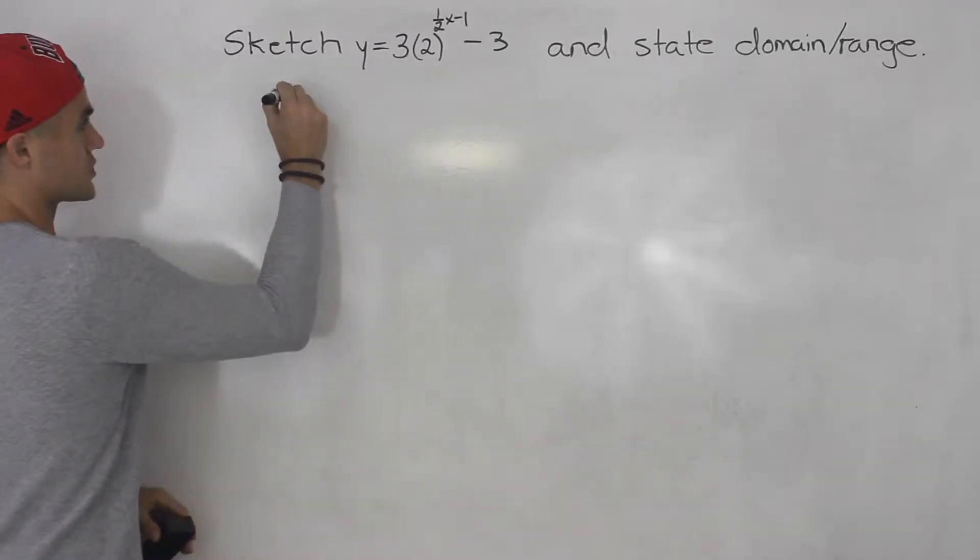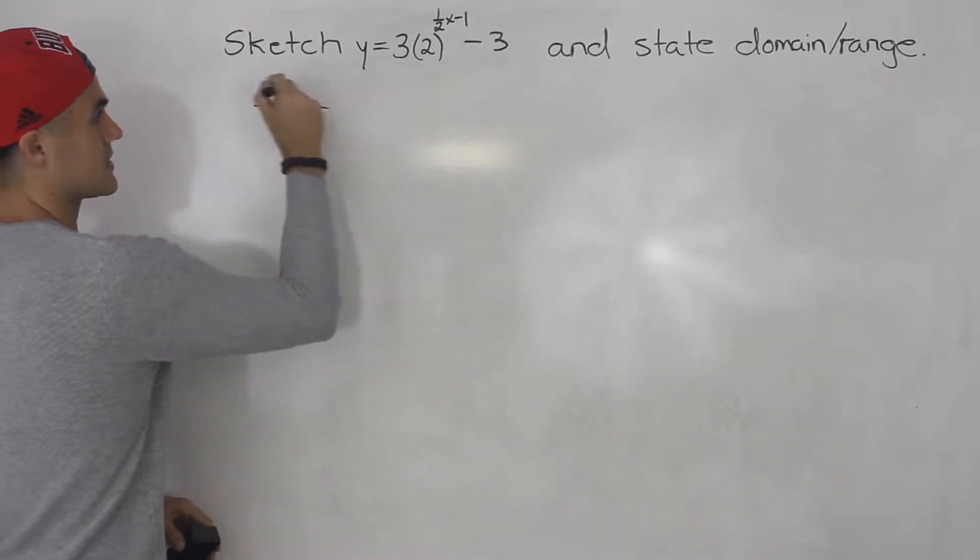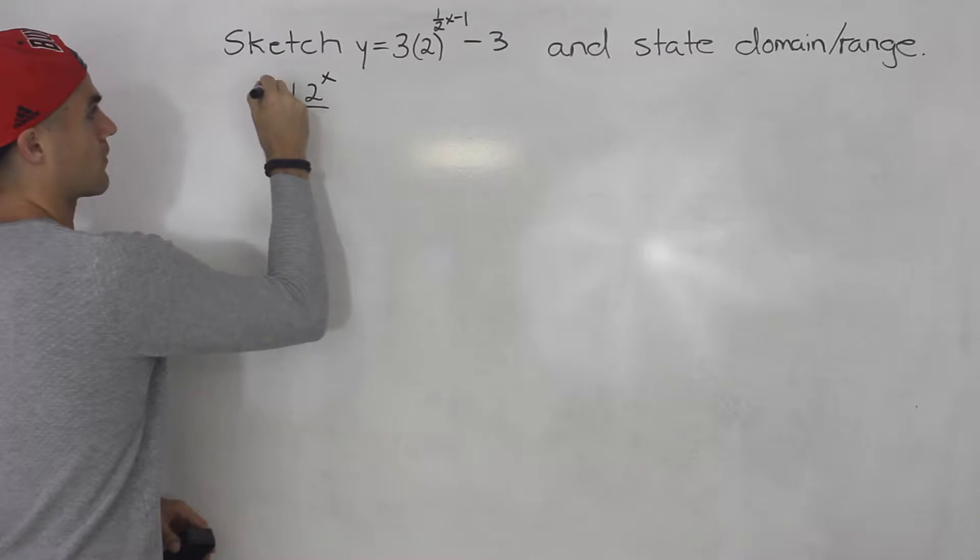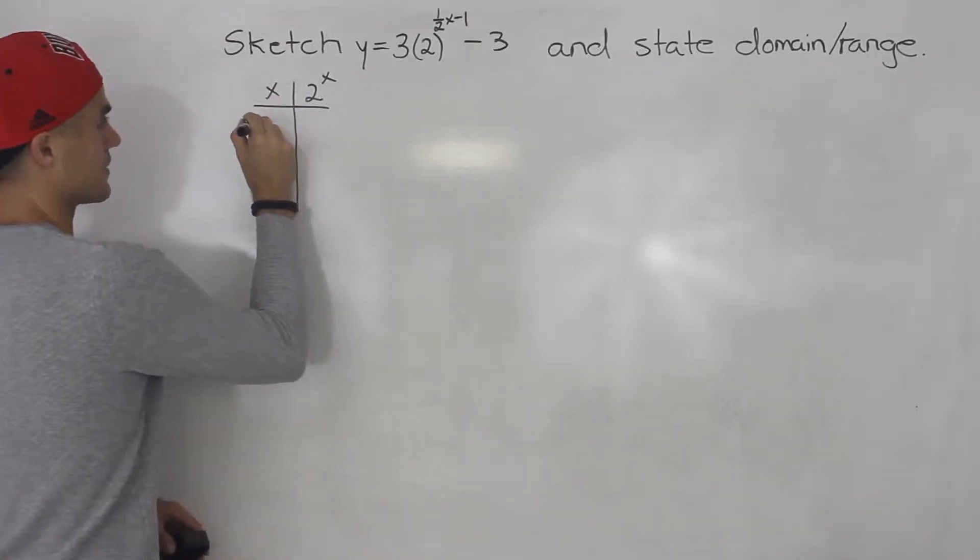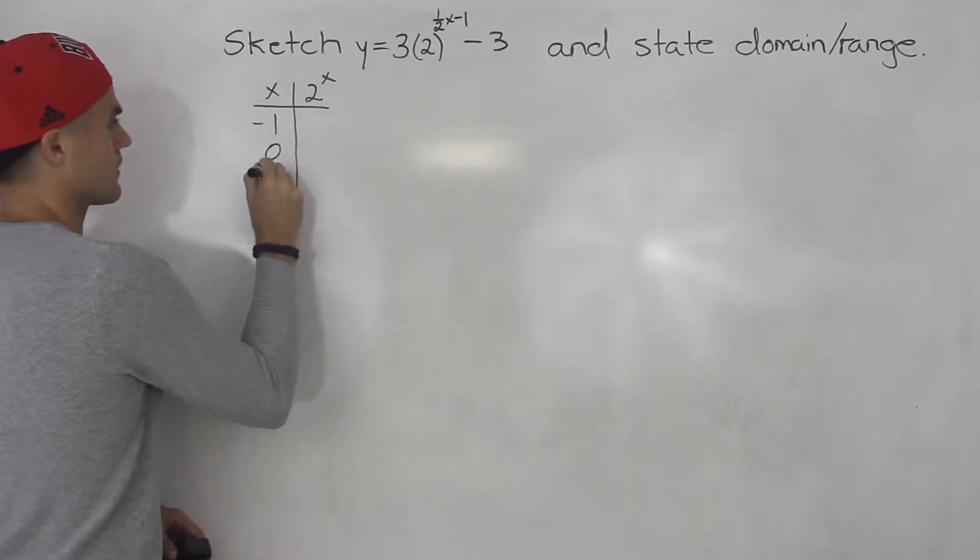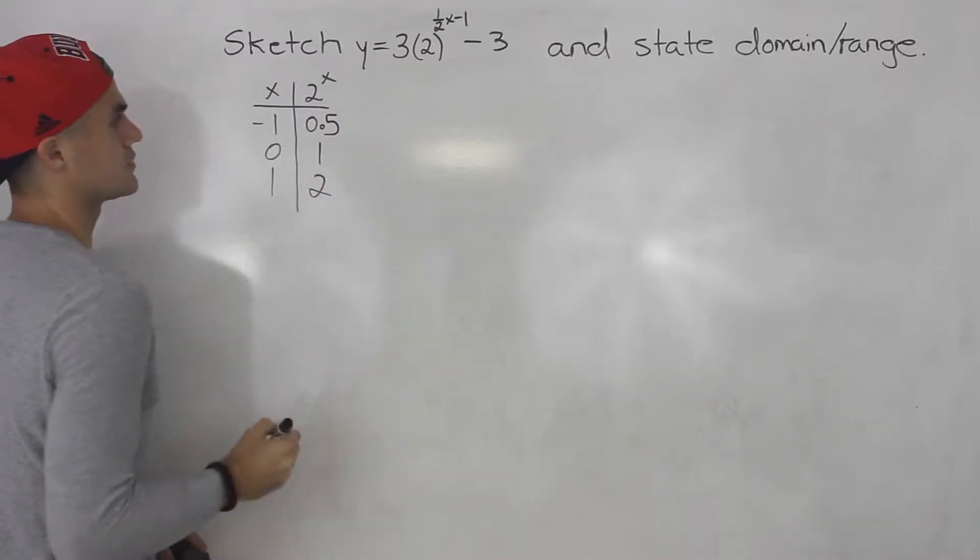So like the questions before, first thing we got to figure out what's the parent function. Parent function in this case is 2 to the power of x. So we want to make a table for that. Let's use x values of negative 1, 0, and 1. So this should be 0.5, 1, and 2.